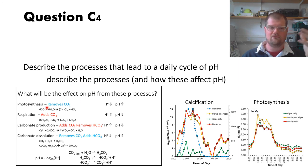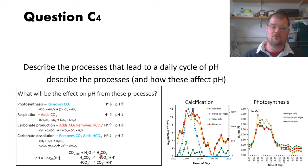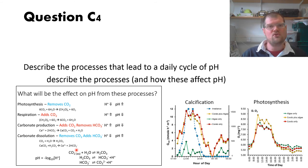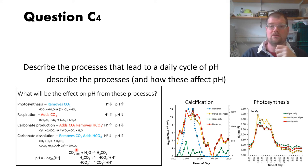You can use these equations to explain how each process affects pH. It wasn't enough just to write down the equation for photosynthesis and say it affects pH. You'd have to say: photosynthesis removes CO₂ from the water; that CO₂ would have been reacting with water to form carbonic acid; by removing CO₂, you're effectively soaking up hydrogen ions to replace it, which raises pH. That level of explanation was needed for each of photosynthesis, respiration, carbonate production, and dissolution.